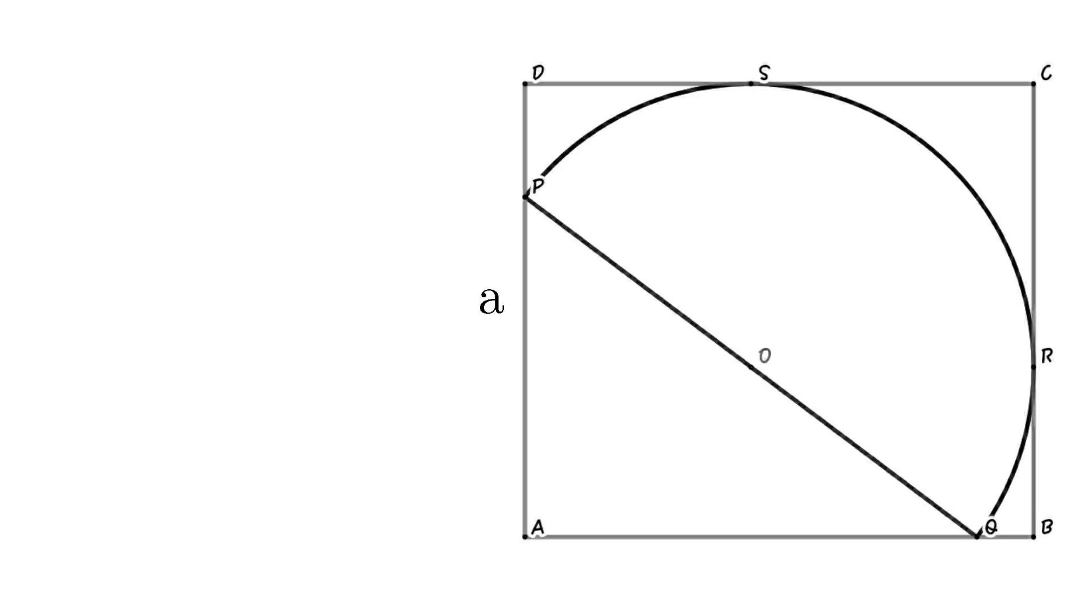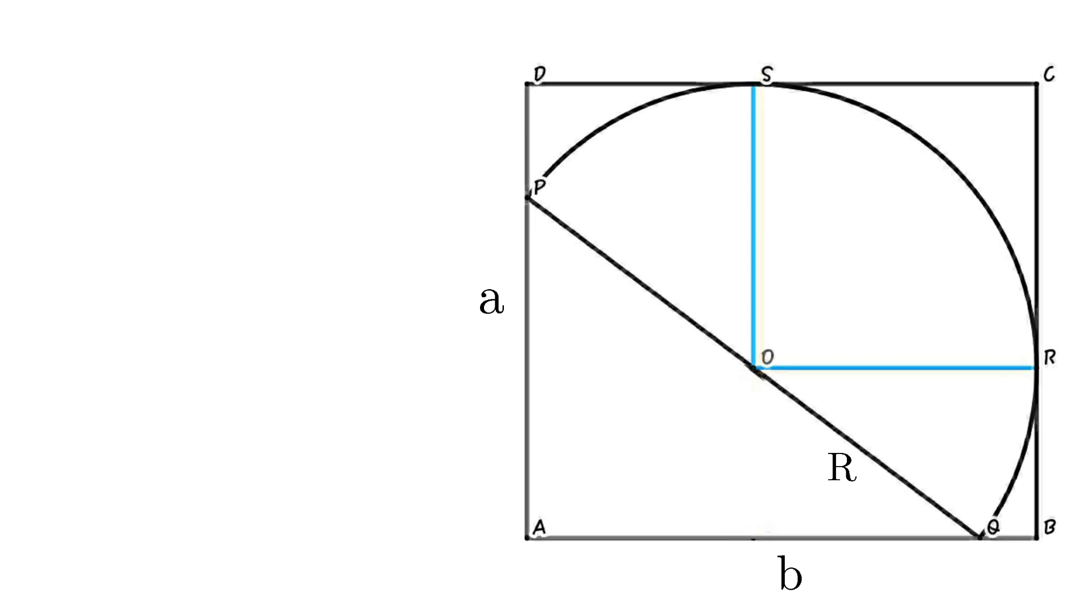Let's consider A and B as sides of the rectangle. Then we can create a general formula for this type of question. Also consider the radius of the semicircle as R and the center of the semicircle as O. Connect OR and OS, then we can form a square with side length R.